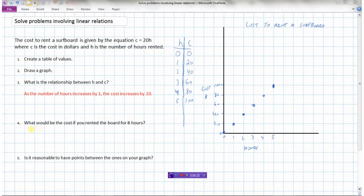Now, let's look at the next question here. What would be the cost if you rented the board for 8 hours? Well, we've got a few ways we could figure this out. We already have the equation. Cost is equal to 20 times H. So if you're telling me how much would it cost if you rent the board for 8 hours, the cost would equal 20 times 8, because H is now 8, and 20 times 8 is $160. So the cost would be $160 if you wanted to rent that board for 8 hours.